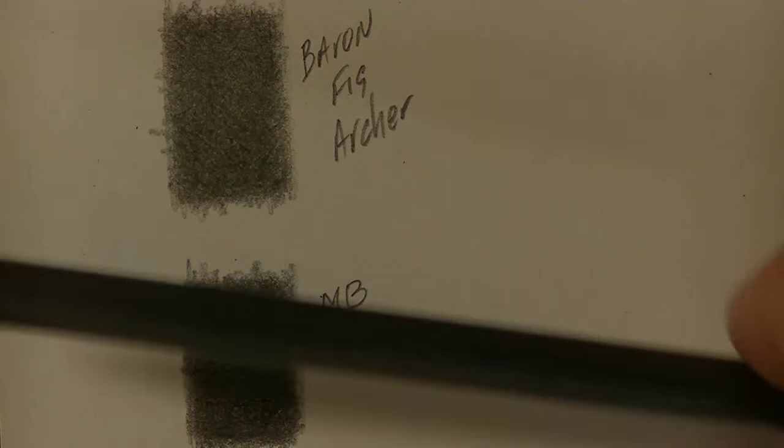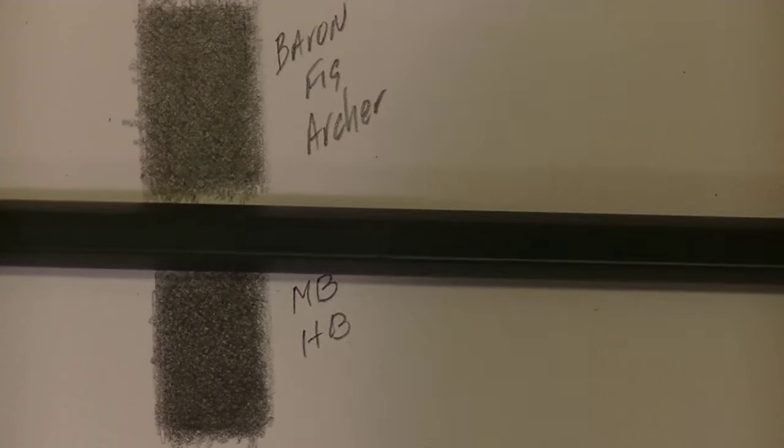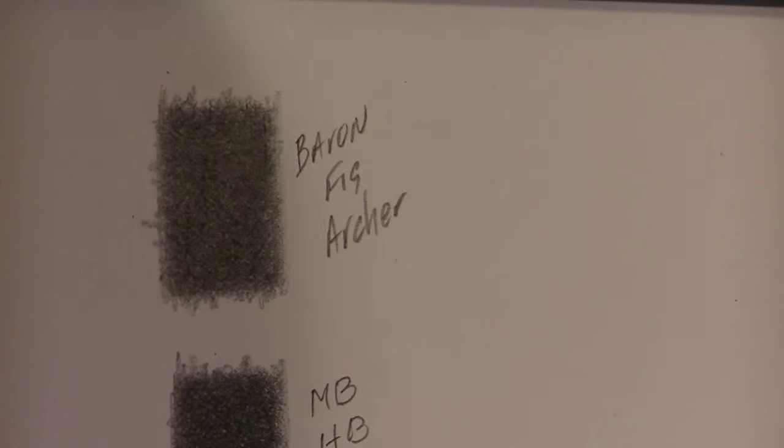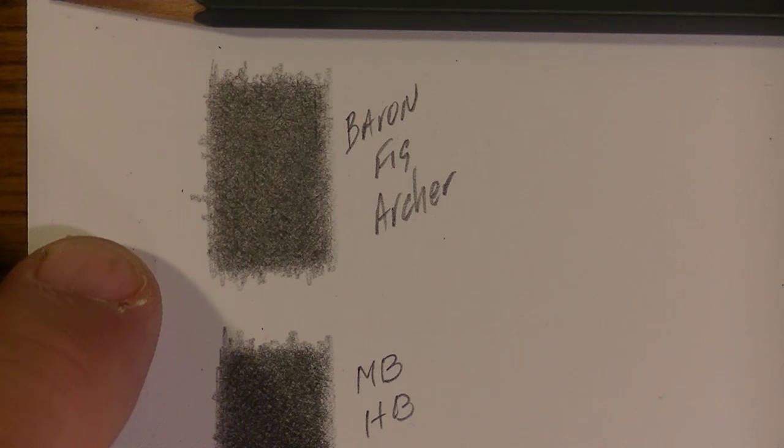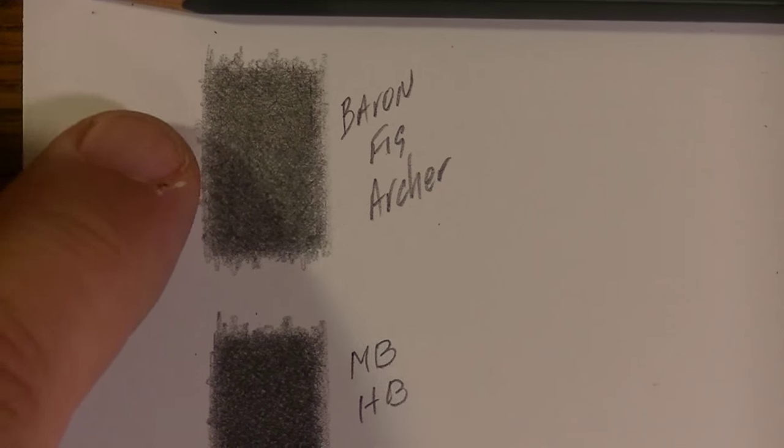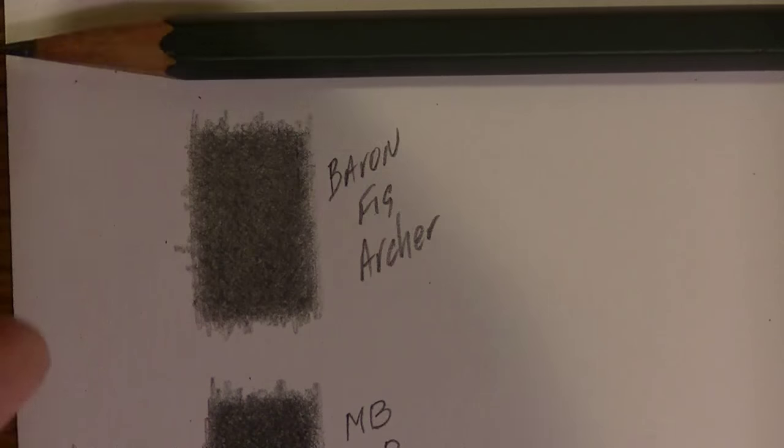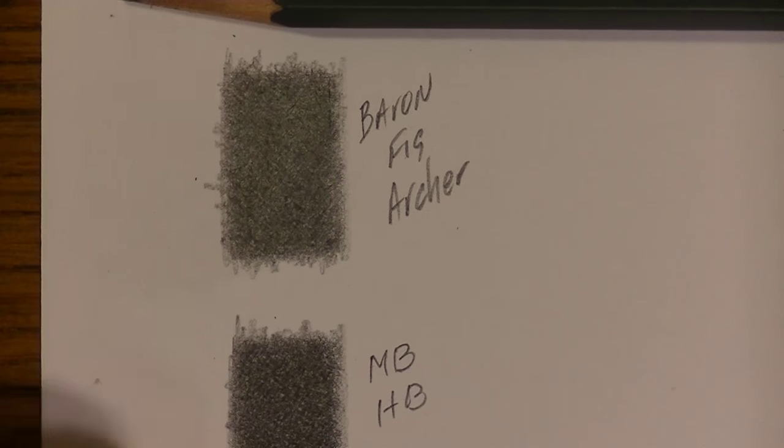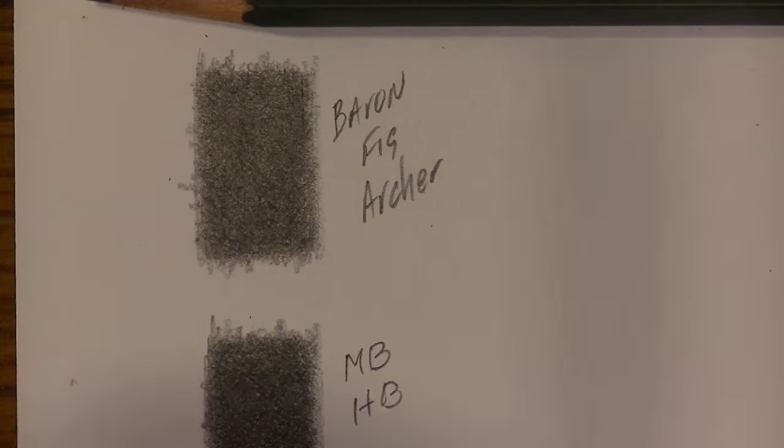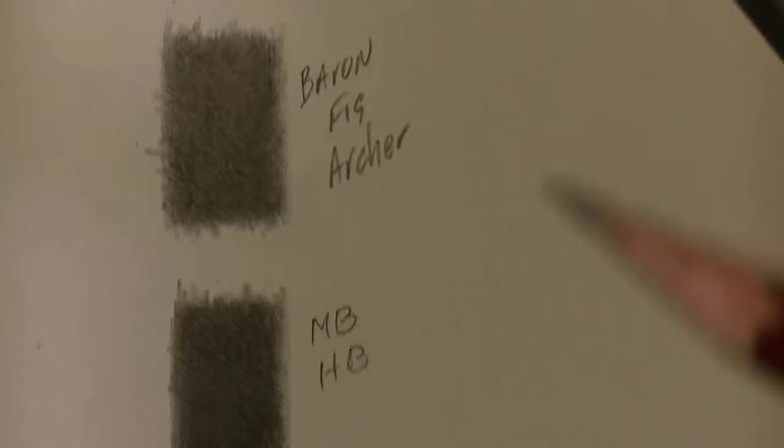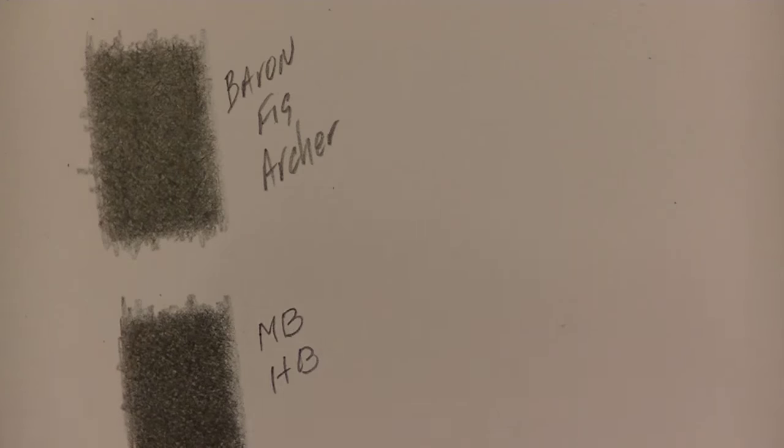So the, interestingly, the darker Mitsubishi HB pencil is softer and darker. And it's an HB than the Baron Fig. And it actually retained the tip better as well to achieve this darker mark. So that is something that is really good to know. So the Baron Archer, Baron Fig Archer pencil. It definitely feels a little harder. Not as soft. It's not as dark. And it didn't actually retain its point as well as the Mitsubishi HB. So there you go as a comparison. I would say then that if it's not an HB that it would likely compare with, let's see the next one down would be from an HB would be an F pencil would be an H pencil.